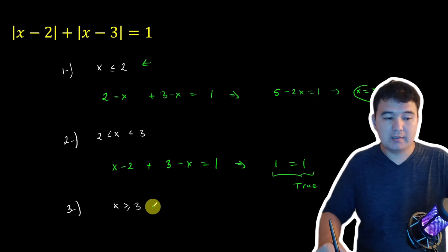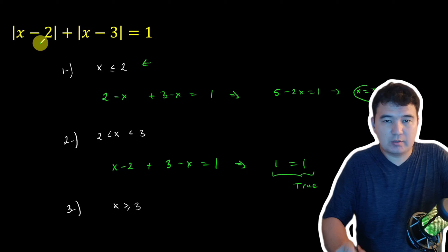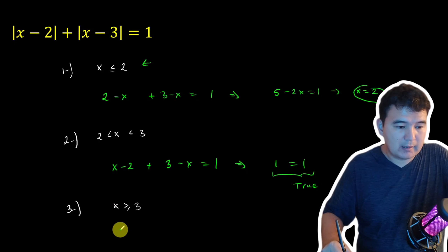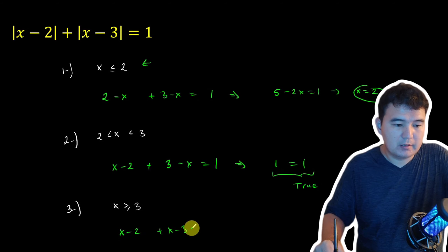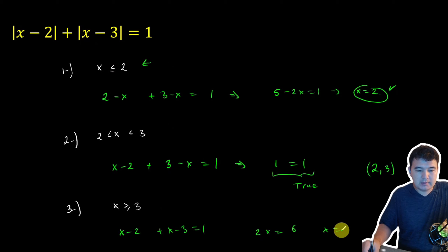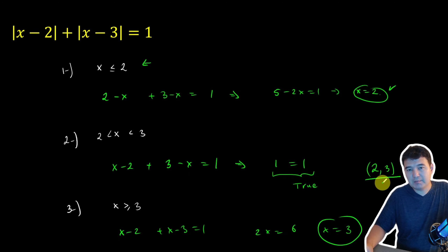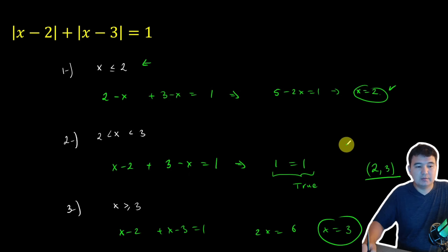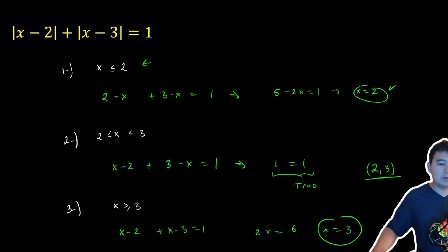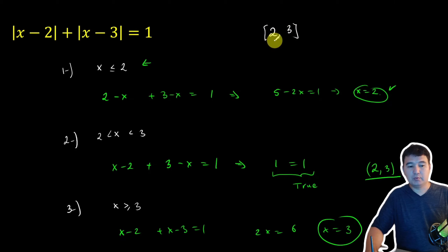Let's see the last case when x is greater than or equal to 3. We can just open the absolute values to get x minus 2 plus x minus 3 equals 1, so 2x equals 6, and x equals 3. Combining all three results, the solution set of this equation is any number from the closed interval [2, 3]. Any number starting from 2 up to 3 works as a good solution for this equation.